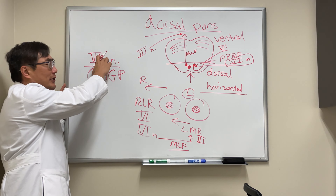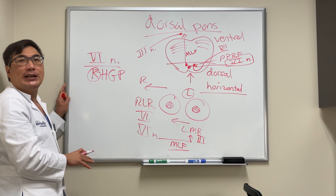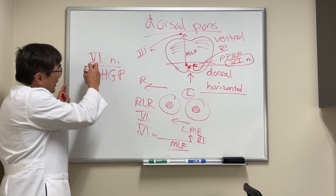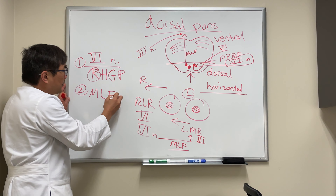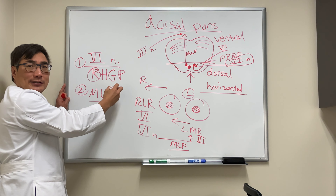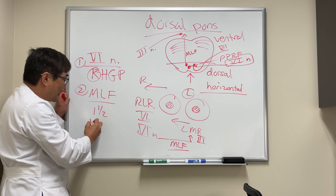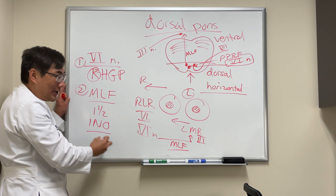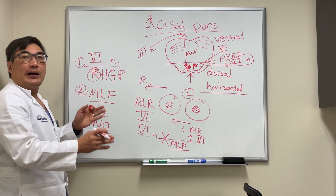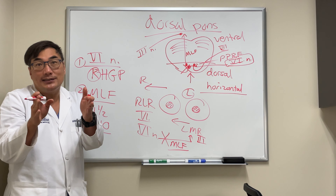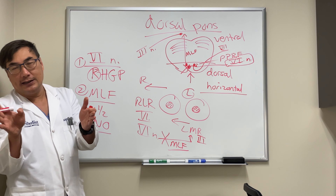A right-sided lesion dings out the right sixth nerve nucleus, which means no signal to the right lateral rectus and no signal to the left medial rectus via the medial longitudinal fasciculus. If we also get the MLF, you'll get one horizontal gaze palsy plus half of another gaze palsy. That half is called an internuclear ophthalmoplegia — because we have dinged out the medial longitudinal fasciculus, producing a dissociated abducting nystagmus on gaze to the contralateral side with an adduction deficit from the medial rectus.